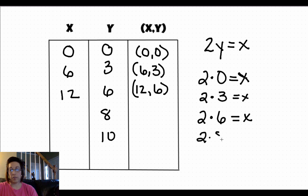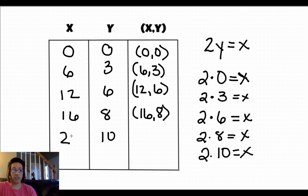2 times 8 equals x. Well, 8 times 2 is 16. So our ordered pair becomes 16, 8. And 2 times 10 equals x. 2 times 10 is 20. So our ordered pair is 20, 10. I'll be right back with one for you to try on your own, and then we'll move to your practice.